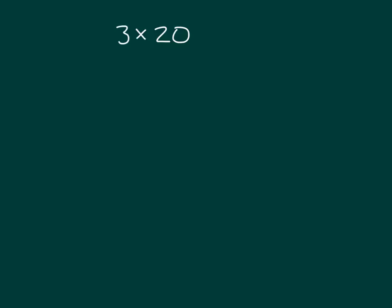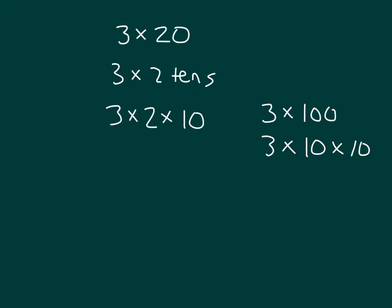Here we have 3 times 20. Just as 3 times 100 could be expressed in different ways, as 3 times 10 times 10, 3 times 20 can also be expressed another way. Well, 3 times 20 is also equal to 3 times, how many tens is this? Right, that's 2 tens. And 3 times 2 tens can also be rewritten as 3 times 2 times 10. Well, I know that 3 times 2 is 6. So we have 6 times 10. And 6 times 10 is 60.